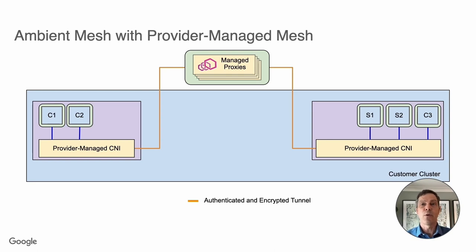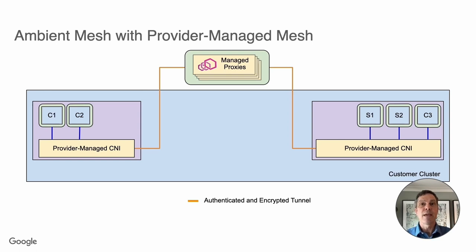These alternative components — an enhanced CNI with ZTunnel functionality and a managed Waypoint proxy — mirror existing components in most cloud providers. By extending the capabilities of the CNI and making use of a managed load balancer, we can provide Istio Ambient Mesh without introducing a new layer for the user to manage. It becomes the responsibility of the cloud provider to maintain and scale the service mesh so users can focus on building their applications. Finally, we expect even greater resource savings because Ambient can leverage the provider's resources instead of them being deployed as part of the cluster.